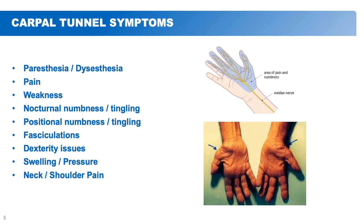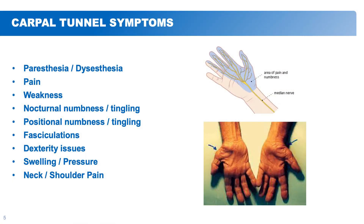Some symptoms you could experience with carpal tunnel include paresthesias or dysesthesias — that painful, irritable discomfort you feel in your hand and fingers. Pain is a very common complaint. Weakness is usually associated with long-standing carpal tunnel affecting the thumb's ability to move. Many people complain of nocturnal or nighttime numbness and tingling. Positional changes cause this — when you sleep with your wrist flexed down, it puts pressure on the nerve, and flexing or extending the wrist can increase pressure in the carpal tunnel by threefold.